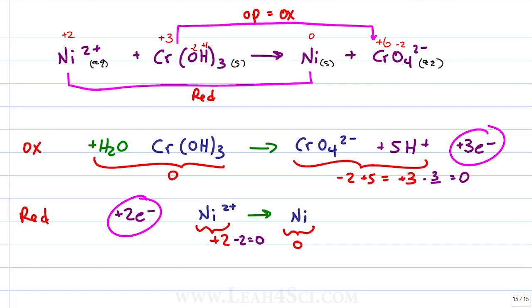Let's find the least common multiple which is 6 because 3 times 2 is 6. That means we multiply the entire oxidation half reaction by 2 and the reduction half reaction by 3.